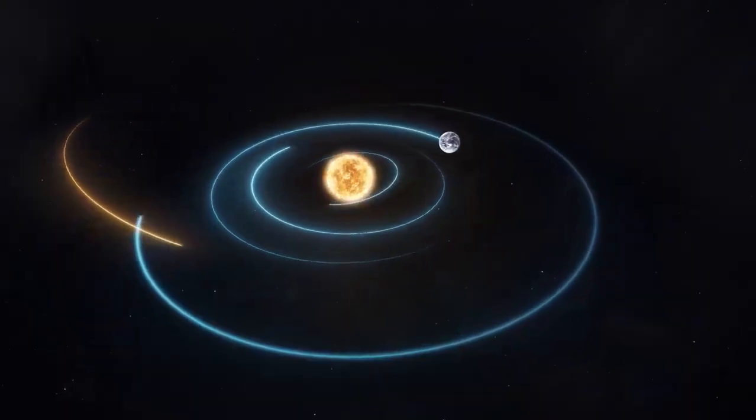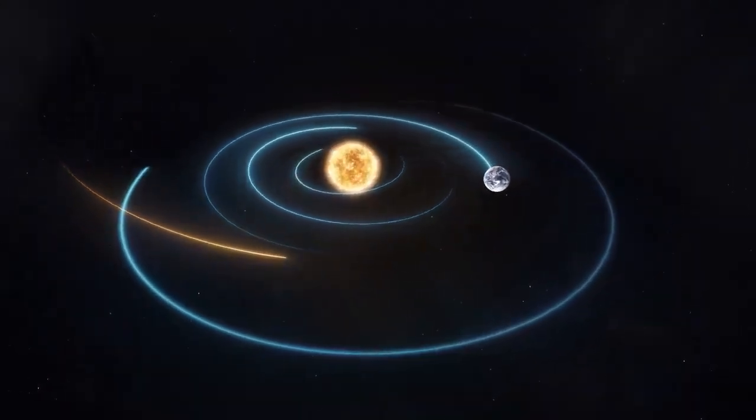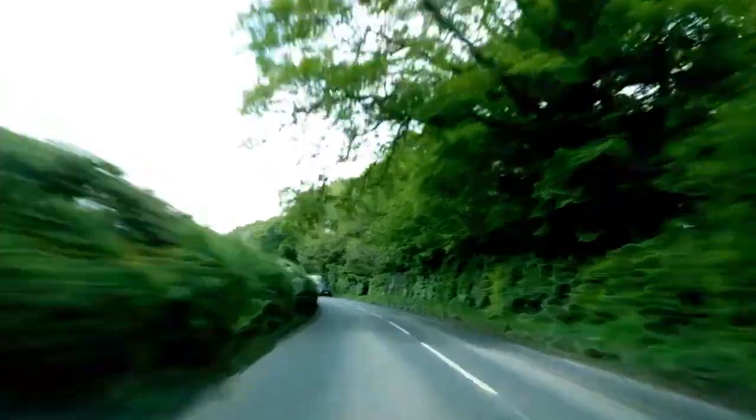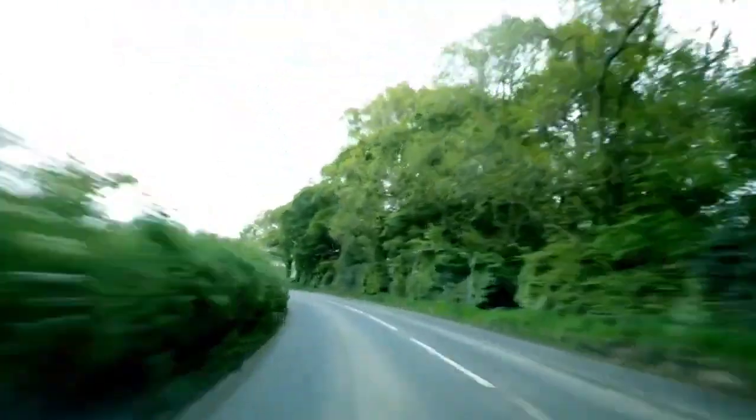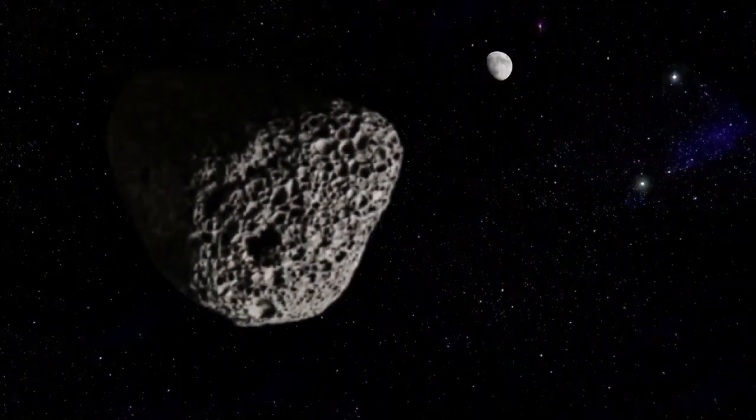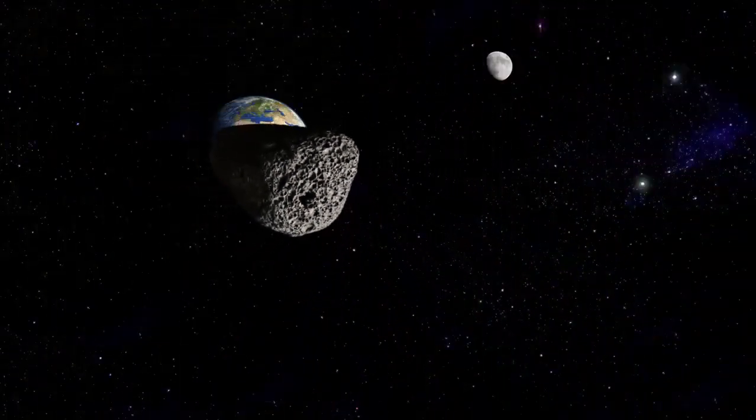If we think about traveling within our own solar system, the distances alone are mind-boggling. Imagine setting off on a journey at a speed of 70 miles per hour. At this rate, it would take approximately 15 days to complete a single lap around Earth's equator.